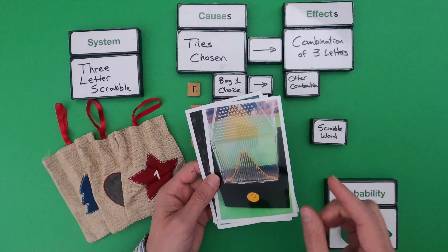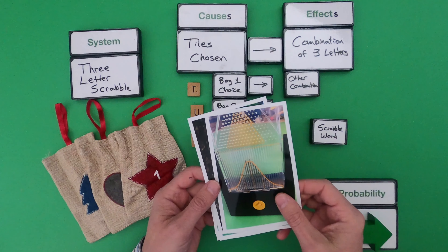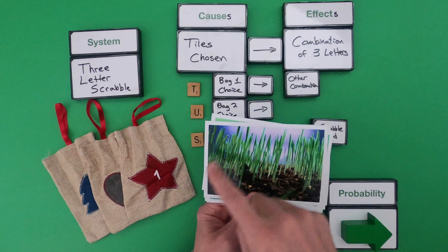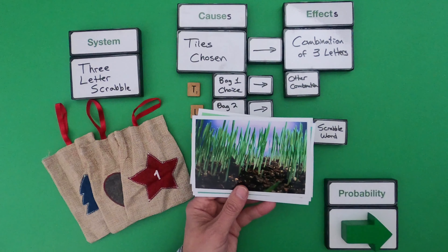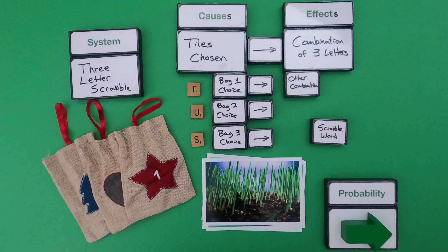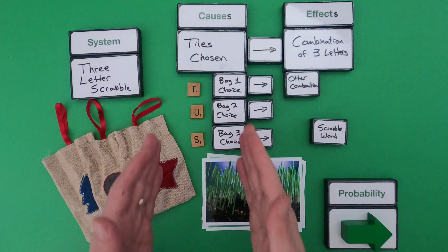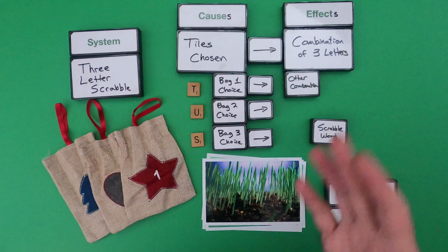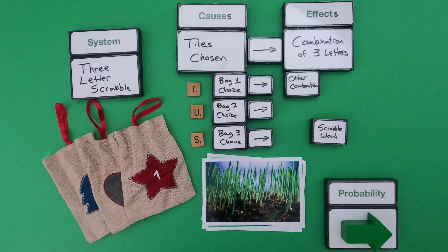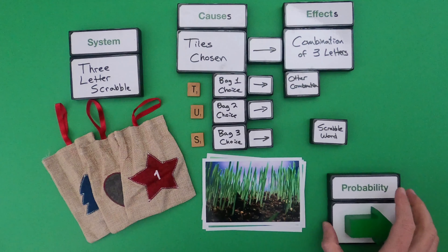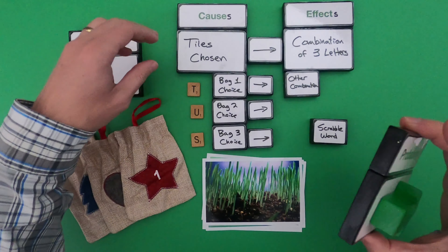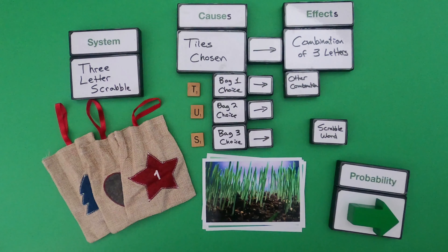The first thing we should always do is define the system that we are going to investigate. So the rules for this game are pretty simple. If you get two or more green, you win. If you get two or more red, you lose. And if you get neither, then you roll again. So let me roll the dice.